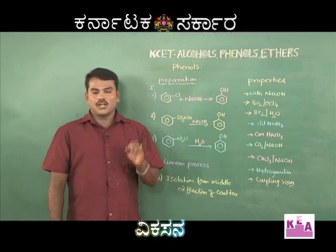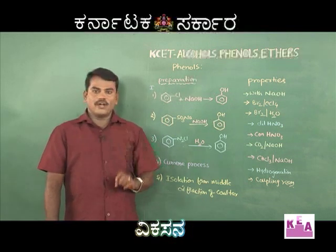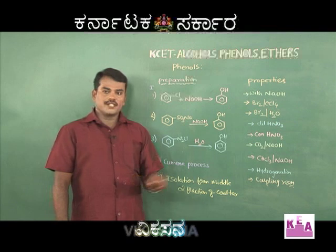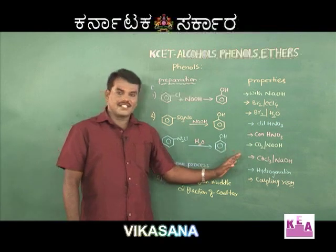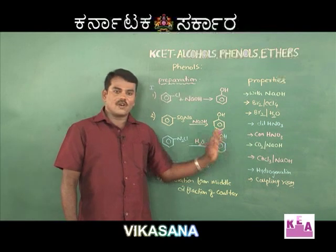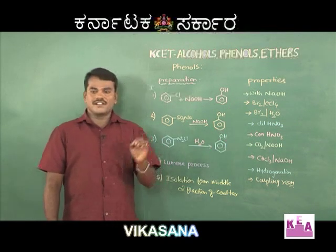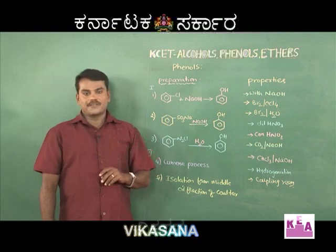Another important named reaction is the Reimer-Tiemann reaction, where phenol or sodium phenate is treated with chloroform (trichloromethane) in the presence of NaOH, giving salicylaldehyde or ortho-hydroxybenzaldehyde. This is called the Reimer-Tiemann reaction.